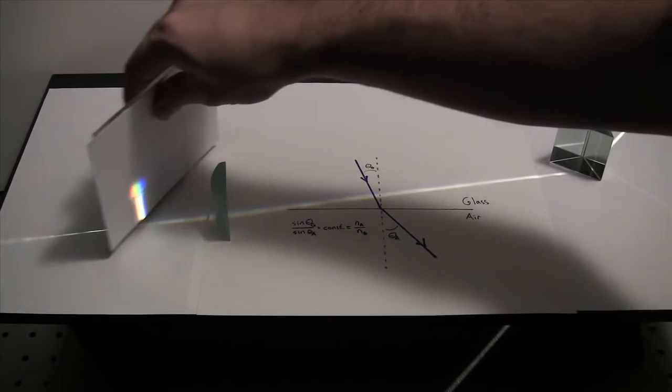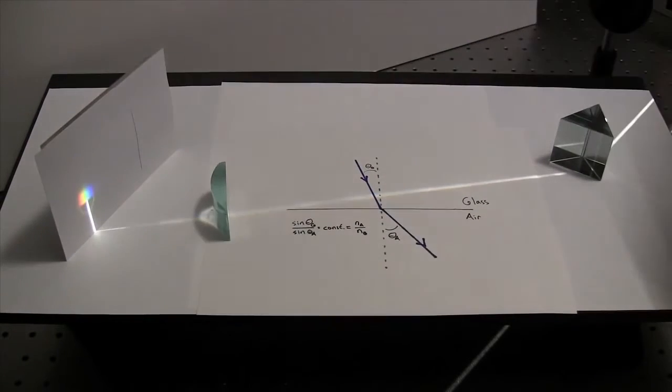If we go further away from the lens and closer to the lens, it's still clearly a spectrum. So is there a way to combine this white light so that we get a beam of white light sort of like we had at the input? It turns out the answer is yes, but it's a little bit more complicated than you would expect.